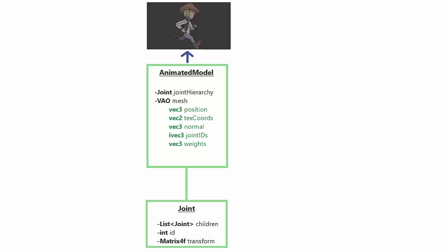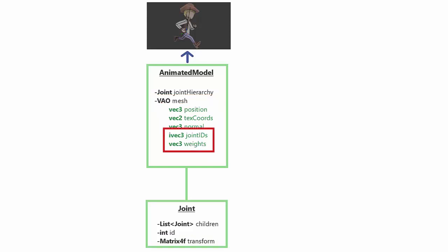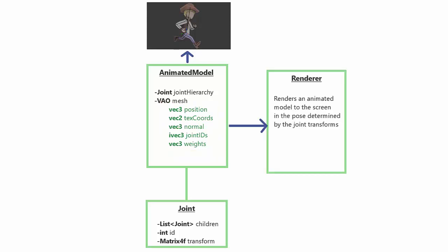The skin is basically just mesh data in a VAO which contains all the normal stuff as well as some extra information about which joints affect each vertex. The Animated Model Renderer can then render an animated model to the screen in the current pose by calculating the position of each vertex based on the joint transforms and the skinning information in the VAO.